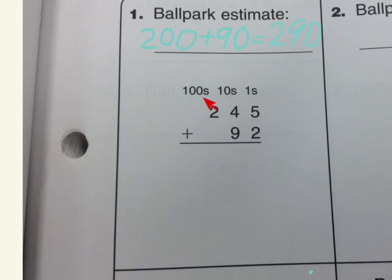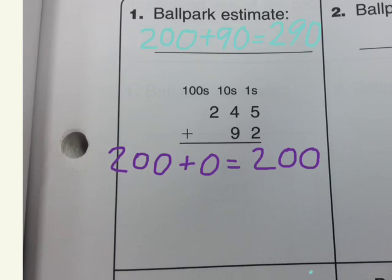Now for this one I have a hundreds place, a tens place, and a ones place, so I need to do each of those, and I'll start with the hundreds place. That's fairly easy. I have 200 and there's 0 in this hundreds place, so 200 and 0 will give me 200.